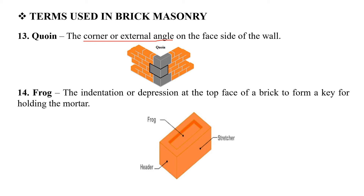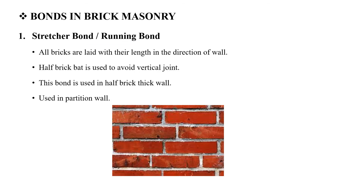The next term is Frog. The Frog is the indentation or depression at the top face of a brick, formed to create a key for holding mortar. The top portion of the brick is provided with this depression, which allows the mortar to get a better hold.